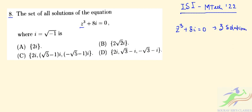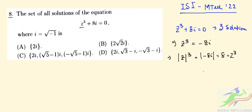We rewrite z³ = -8i. Taking the modulus, |z³| = |-8i| = 8, which equals 2³, so |z| = 2.